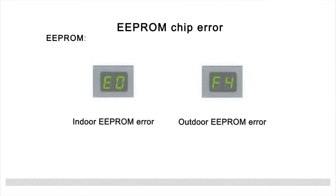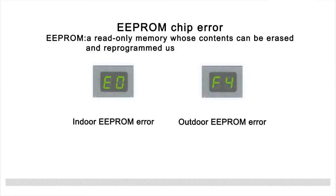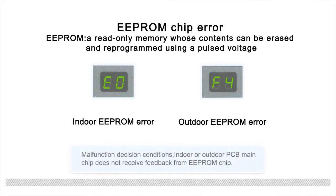When the display board of the indoor unit displays E0 or F4, that indicates an EEPROM chip error. EEPROM is a read-only memory whose contents can be erased and reprogrammed using a pulsed voltage. The malfunction condition occurs when the indoor or outdoor PCB main chip does not receive feedback from the EEPROM chip.